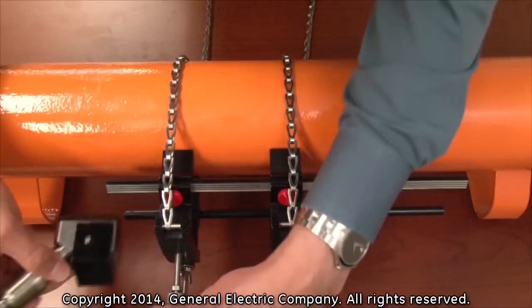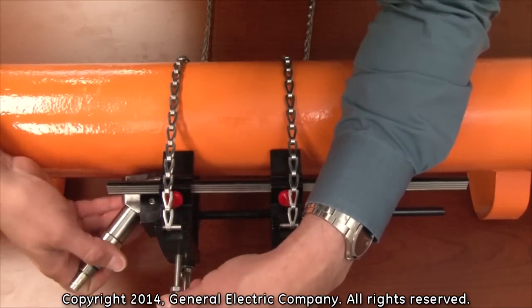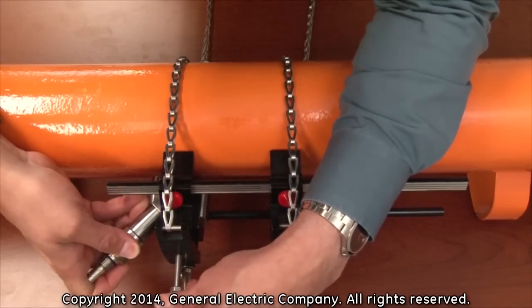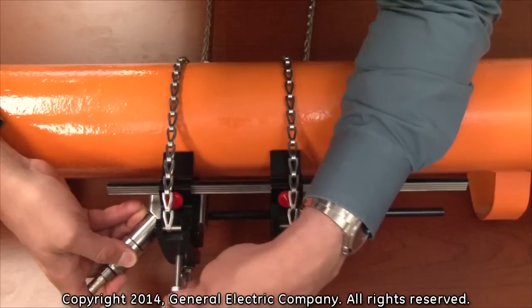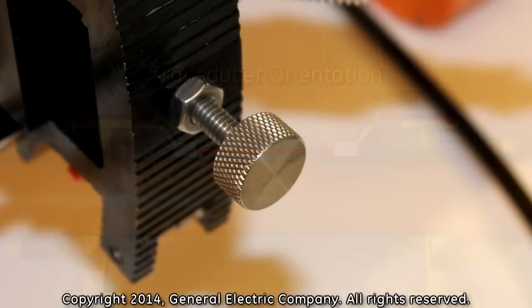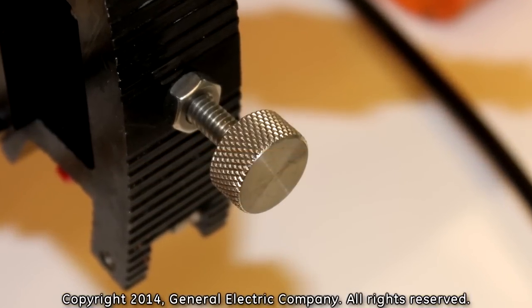For the installation, slide the transducer into the mounting fixture and ensure that the center bolt fits into the insert hole on the top of the transducer securing bracket. Make sure to orient each transducer toward each other so that the BNC connections on the other end of the transducers are facing outward.